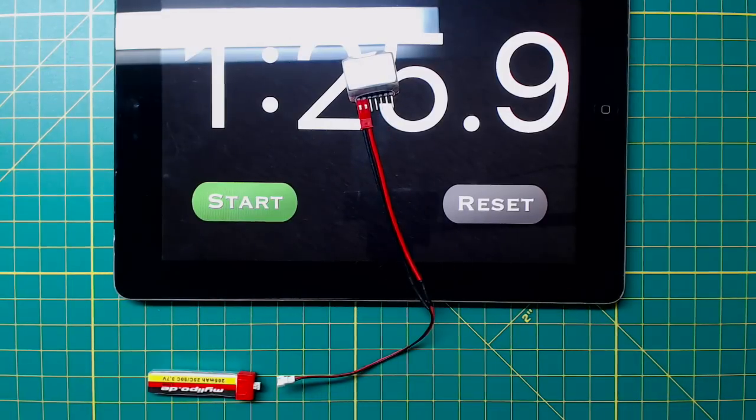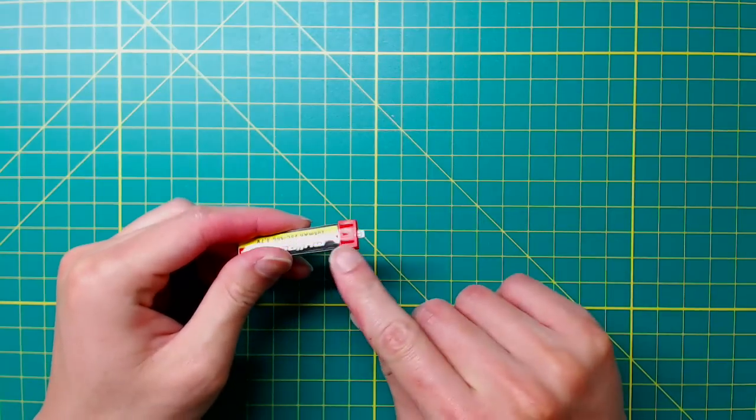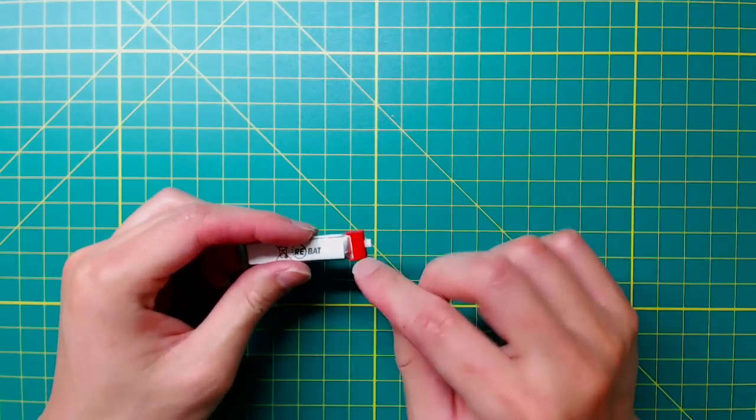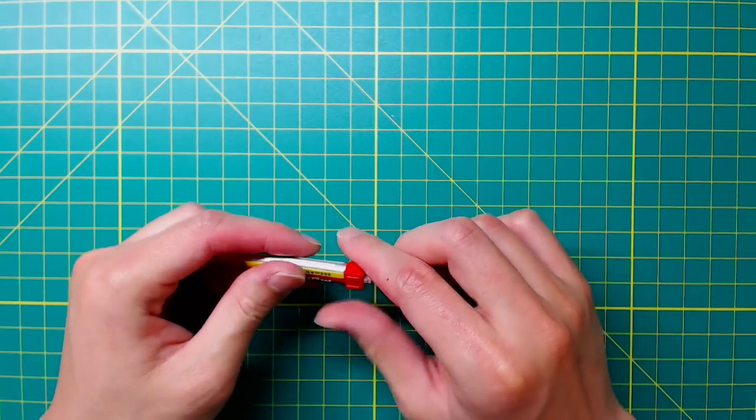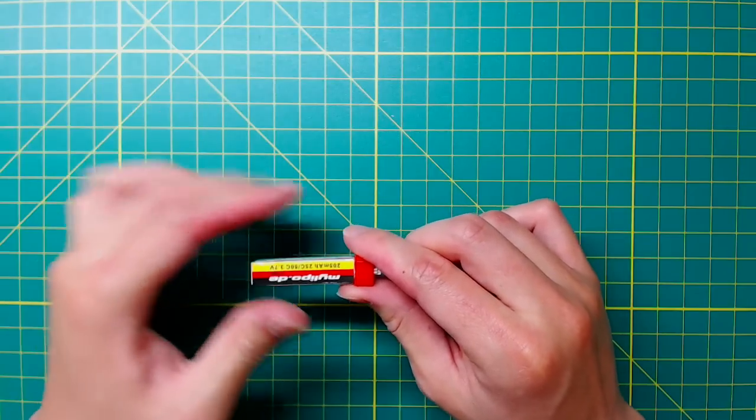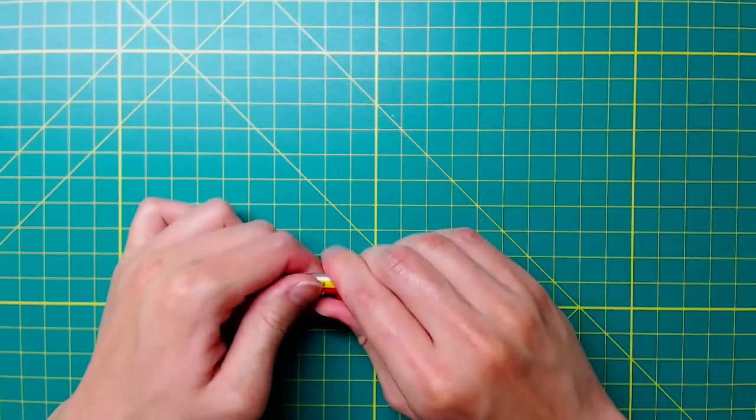To start the repair, first we need to remove the red housing. The housing is glued by some silicone rubber. It shouldn't be too difficult to take it off—just try a gentle rocking motion and be patient. Beware not to damage the battery terminal inside.